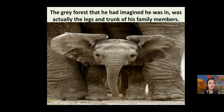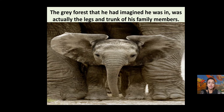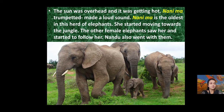The grey forest Nandu had imagined was actually the legs and trunk of his family members. He thought he was in a forest of big grey branches, but actually he was surrounded by the legs of his family. You can see in the picture — Nandu is in between the trunks. The sun was overhead, meaning it was afternoon and getting very hot.